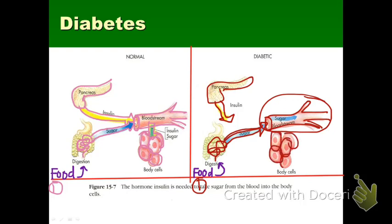In a diabetic patient, the body cells receive little or no sugar, so they begin to die off and become very toxic. Because the sugars cannot enter the cells, they stay in the bloodstream and get excreted in the urine instead of being utilized as they should.